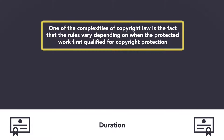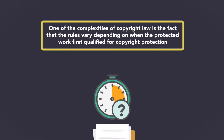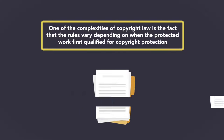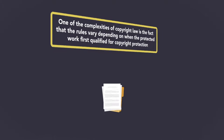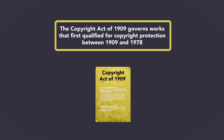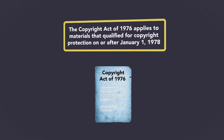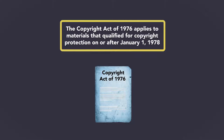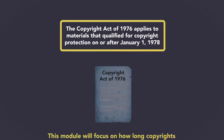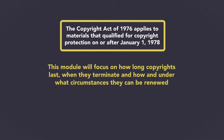One of the complexities of copyright law is the fact that the rules vary depending on when the protected work first qualified for copyright protection. These differences are the results of the various amendments to copyright laws enacted over time. The Copyright Act of 1909 governs works that first qualified for copyright protection between 1909 and 1978. The Copyright Act of 1976 applies to materials that qualified on or after January 1, 1978. This module will focus on how long copyrights last, when they terminate, and how and under what circumstances they can be renewed.